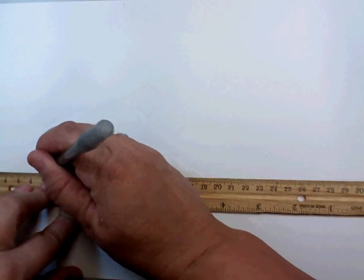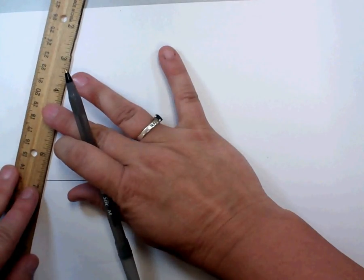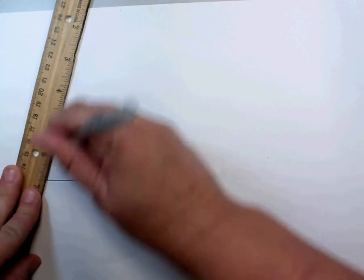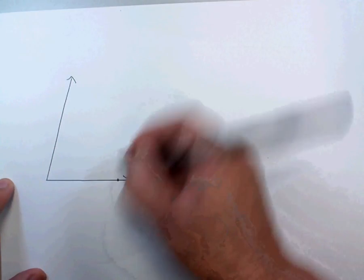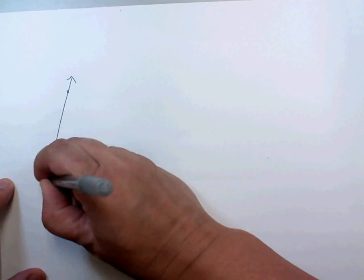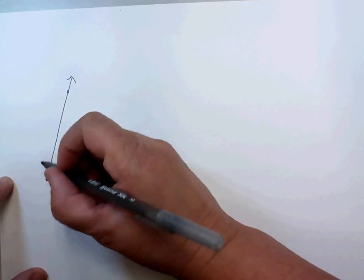The first thing you need to do is draw an angle of any kind. And we're going to name this angle, Angle A.